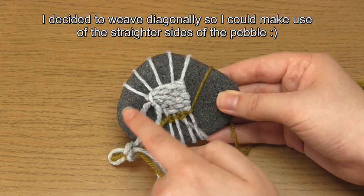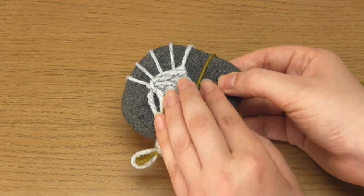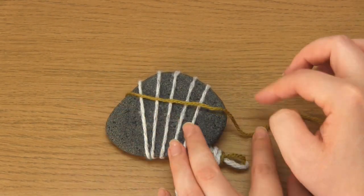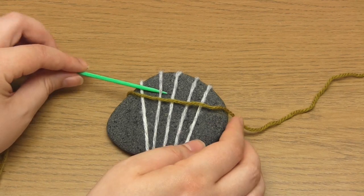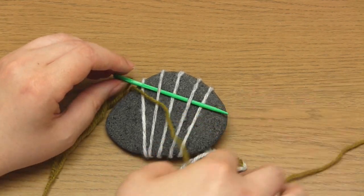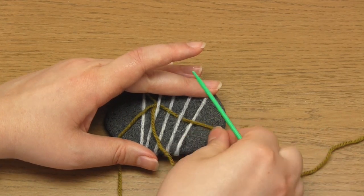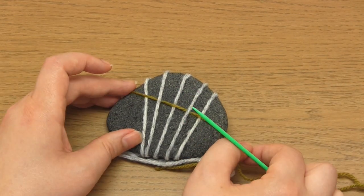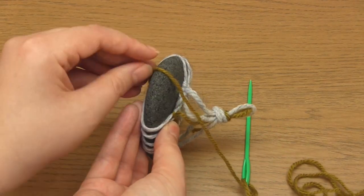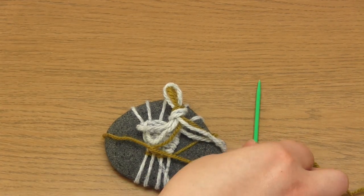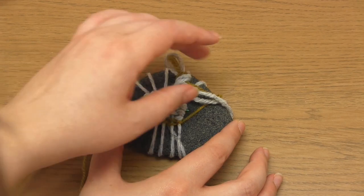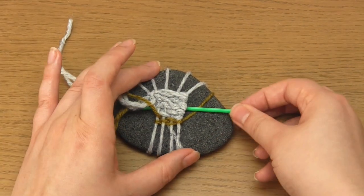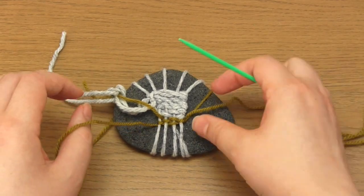Next, turn the front of the pebble to face you and then weave across these strands from left to right. Wrap the yarn around to the back of the pebble, take it under the strands at the back and then repeat the process again and again until you have at least several inches of yarn remaining. I personally did nine wraps.